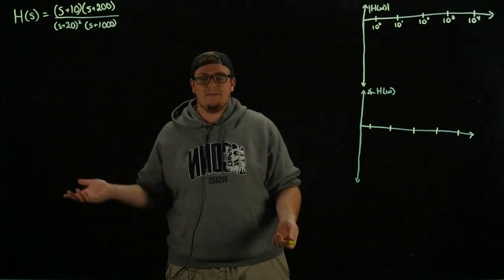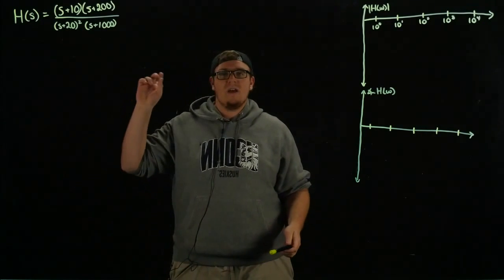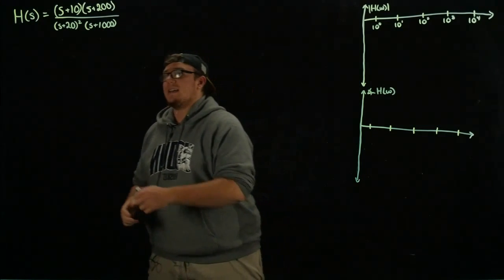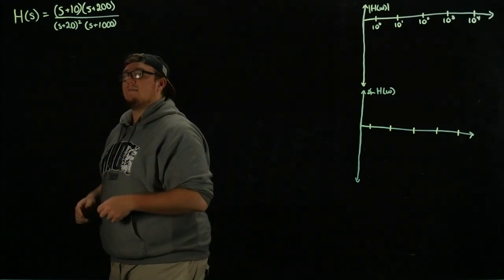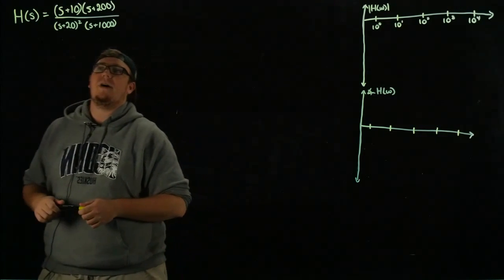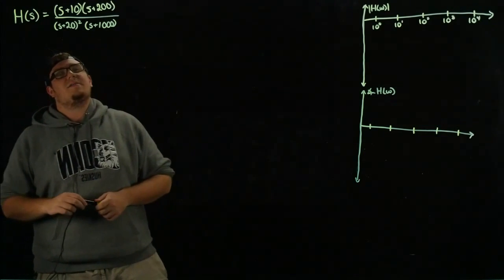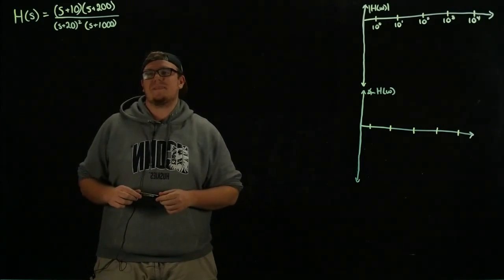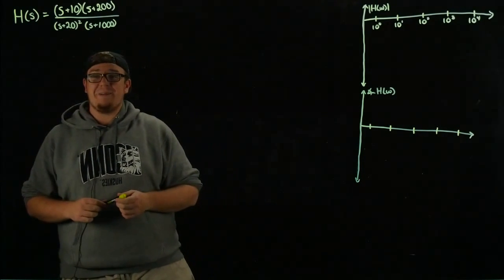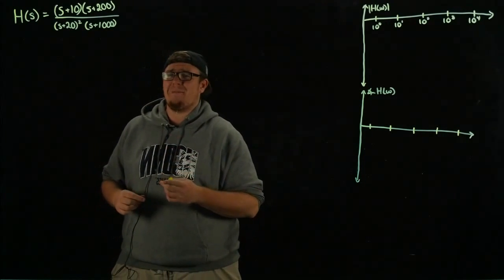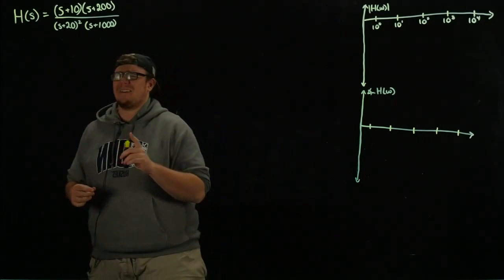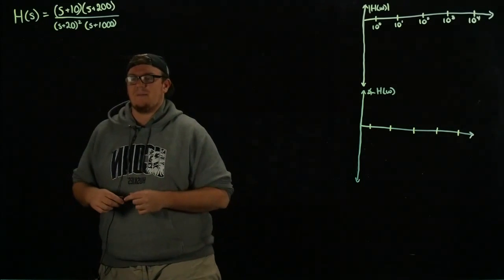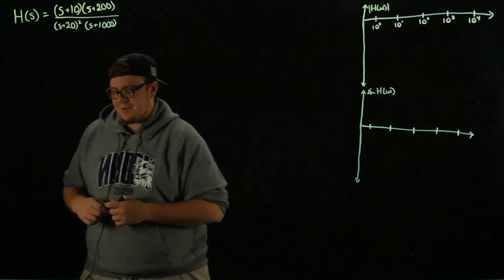Specifically, we'll work with this transfer function: (S + 10)(S + 200) divided by (S + 20) squared times (S + 1000). We already factored it because looking at it all multiplied out, you probably wouldn't be able to identify the key features very quickly.